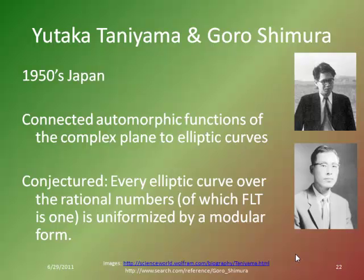In 1950s Japan, two men are working. One of them, Yutaka Taniyama, is not really a man of means. He's having to work through college and doesn't quite have the sway that some other men of different countries or means might have had access to. But he manages to connect automorphic functions — which we saw when looking at Poincaré — to the complex plane and then to elliptic curves.